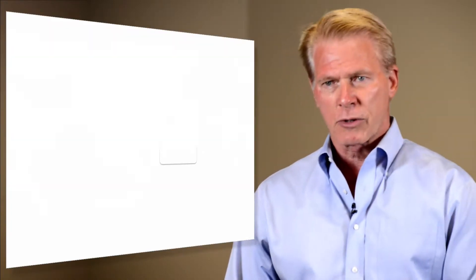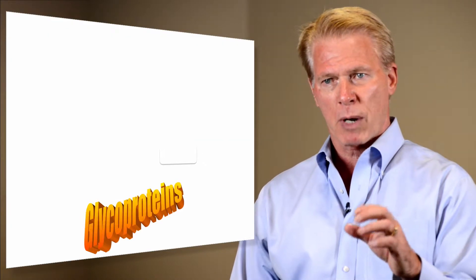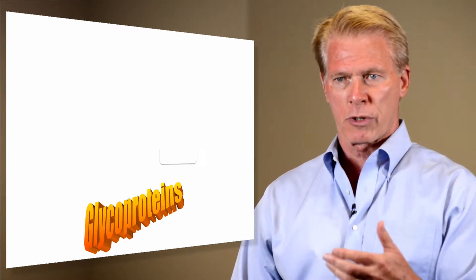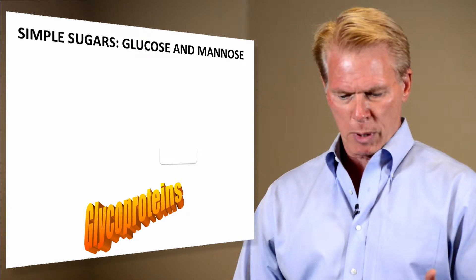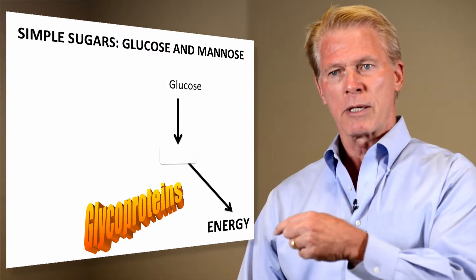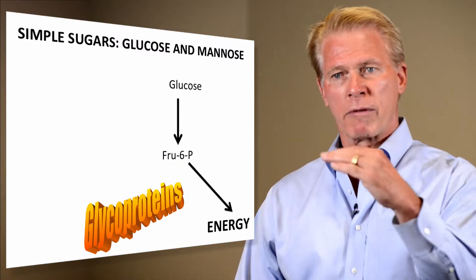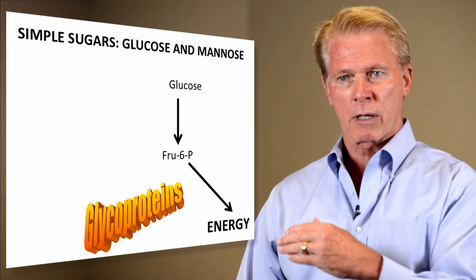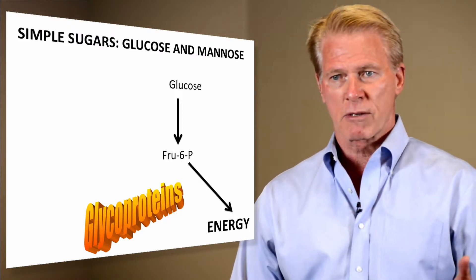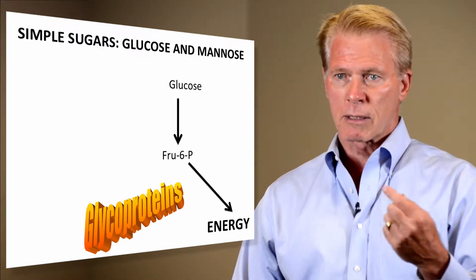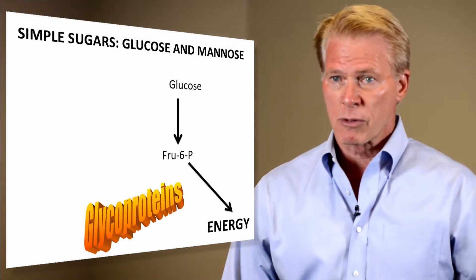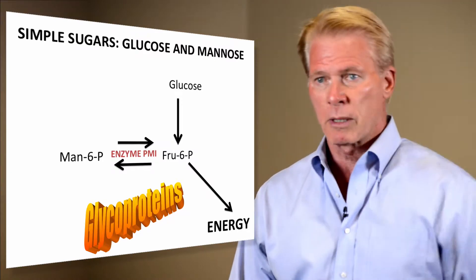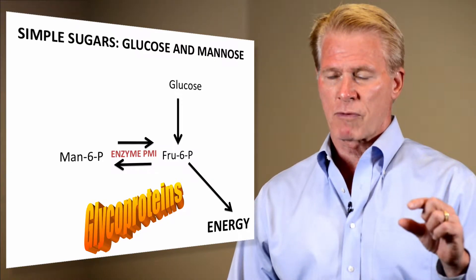Mannose 6-phosphate. What's that? Well, it turns out that glucose is one of those really important sugars that can be used for energy, and it can also be involved in glycoproteins. Glucose can be used to generate energy, and it does so in various steps. One of those steps involves a conversion to fructose 6-phosphate. And there is an enzyme that can convert fructose 6-phosphate to mannose 6-phosphate — that's called PMI. It can make mannose 6-phosphate.